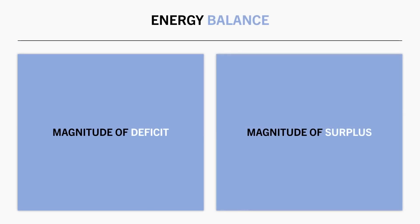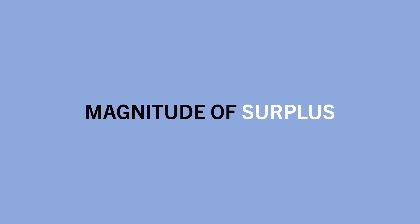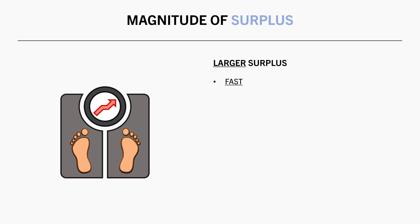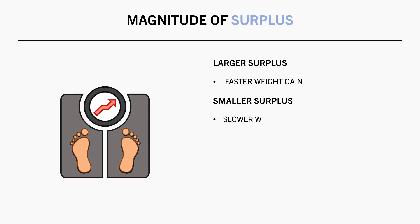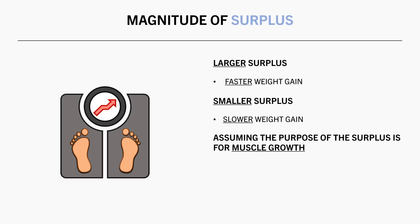Similar to weight loss, the magnitude of the calorie surplus influences our rate of weight gain. A larger surplus results in faster weight gain, while a smaller surplus results in slower weight gain. The rate at which we intend to gain weight will depend on the purpose of the calorie surplus. For this video, we will assume that the purpose of weight gain is to enhance our ability to build muscle via resistance training. Novice lifters seem to benefit to a greater extent from a surplus compared with more advanced lifters.